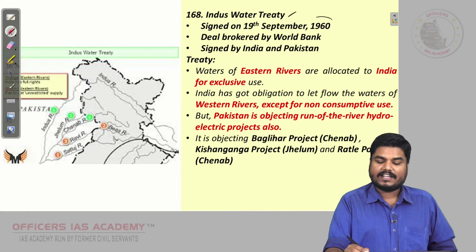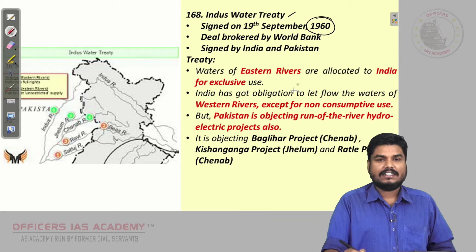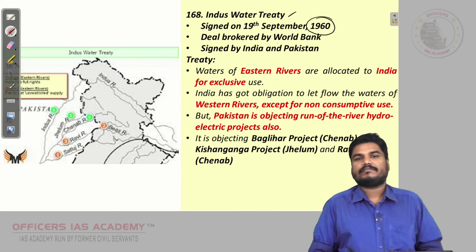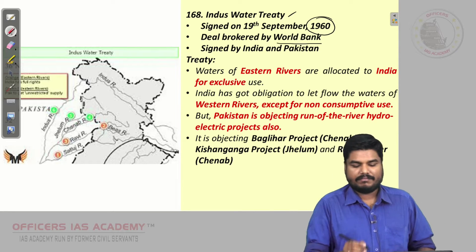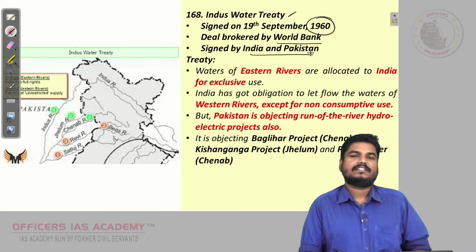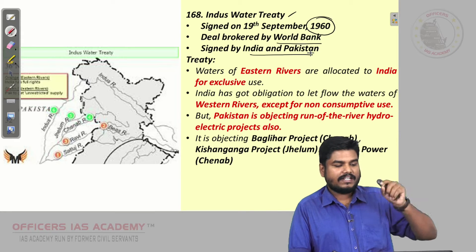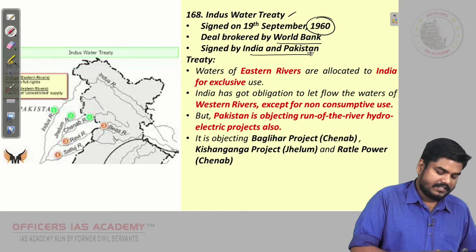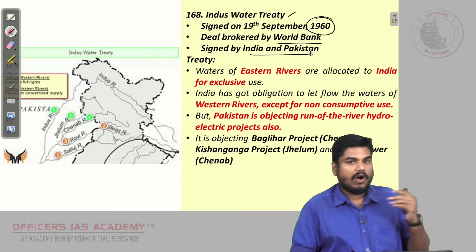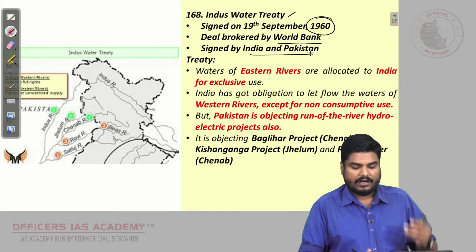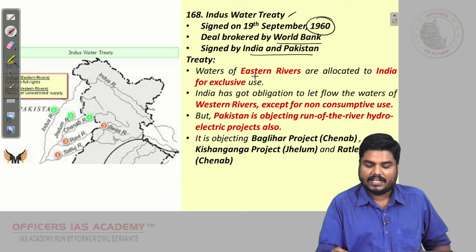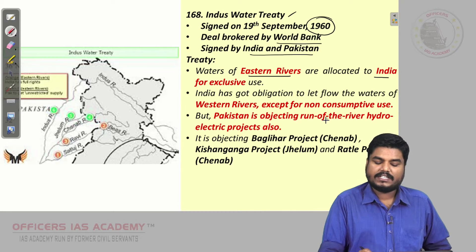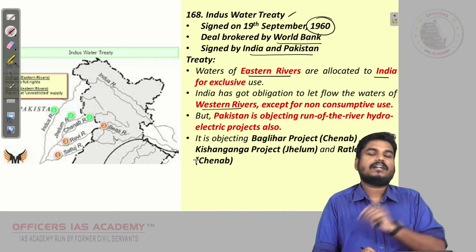The treaty was signed in the year 1960, and the deal was brokered by the World Bank between India and Pakistan. This treaty says that the waters of the eastern rivers are allocated to India, and the waters of the western rivers are allocated to Pakistan.